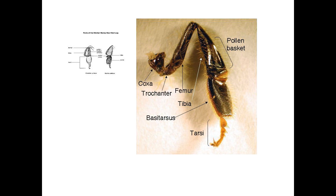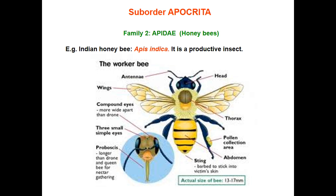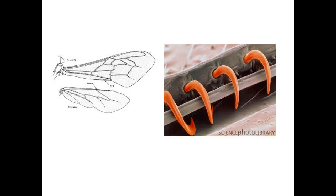The pollen basket is present in the hind tibia. Honeybees are social insects with three castes: queen, drone, and worker. Temporal separation of duties is noticed among workers — each instar or period of weeks involves different types of work, like foraging, building wax, and feeding young ones. The best example is the Indian honeybee, Apis indica, which is a productive beneficial insect. Structural modifications in legs, wings, and body parts will be seen in a later lecture.